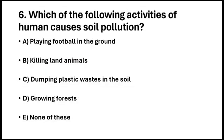Question number 6. Which of the following activities of humans causes soil pollution? Option A. Playing football in the ground. Option B. Killing land animals. Option C. Dumping plastic waste in the soil. Option D. Growing forest. Option E. None of these. So the answer is option C.